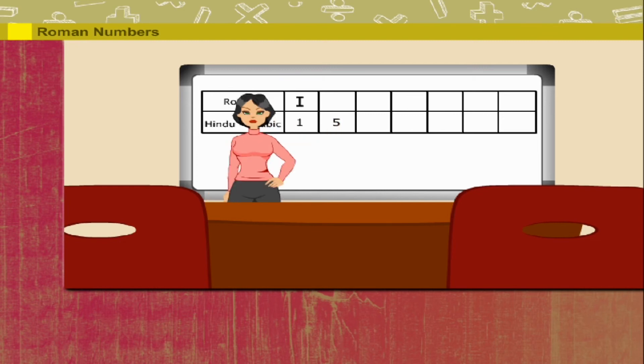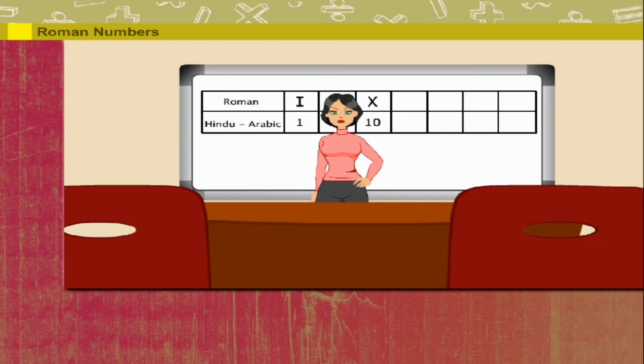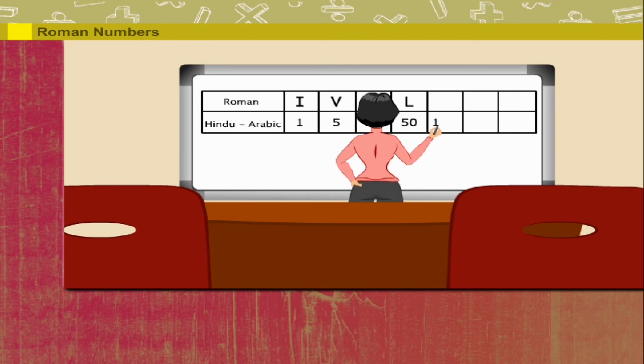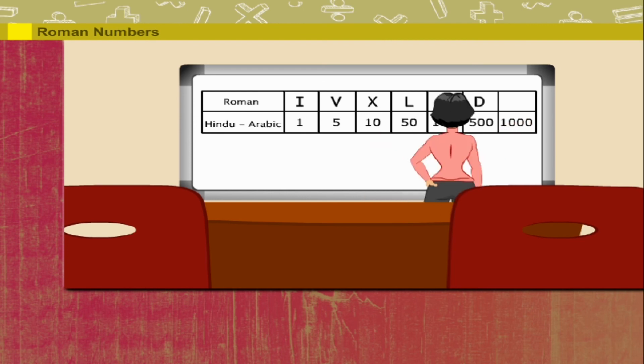Five is written as V. Ten is written as X. Fifty is written as L. Hundred is written as C. Five hundred is written as D.